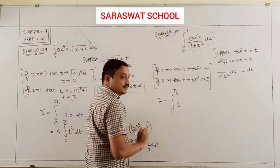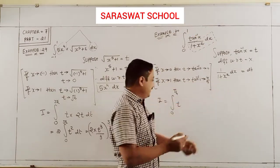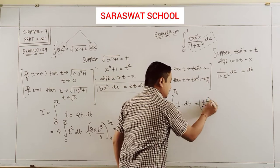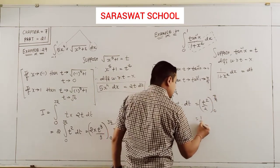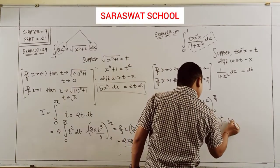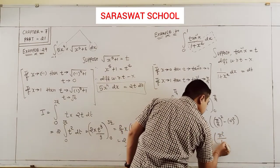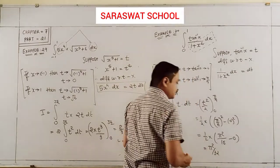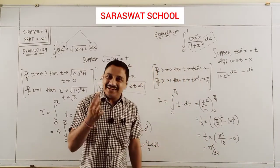The integrand becomes t dt. The integration of t squared by 2, with limit 0 to π/4. So take 1/2 outside: (π/4)² minus 0², which gives π²/16 divided by 2. So my answer is π²/32. Final answer easily done.